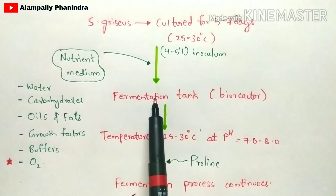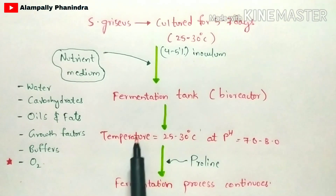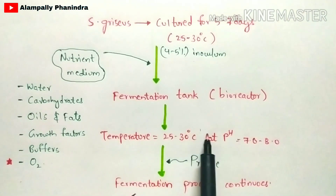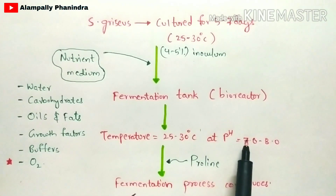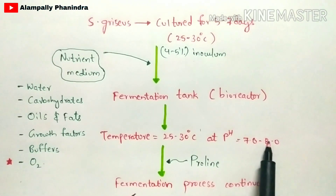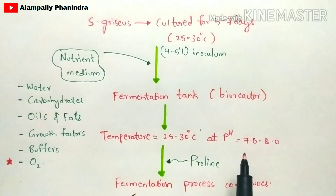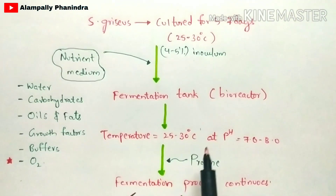The temperature applied is 25 to 30 degrees Celsius, and the pH is controlled between 7.0 and 8.0.